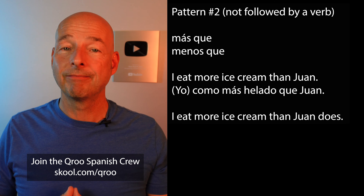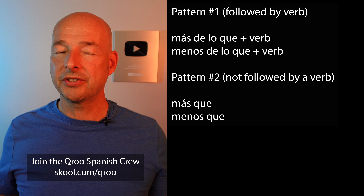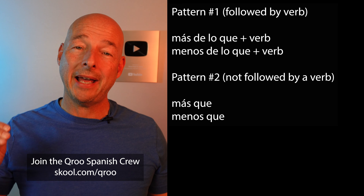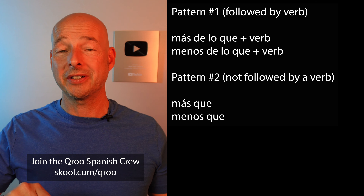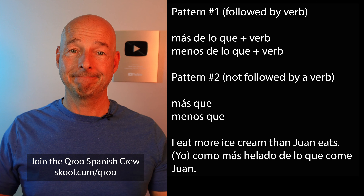Now, I know someone out there is thinking: 'What if I want to say that verb again? What if I want to say I eat more ice cream than Juan eats?' I know somebody's asking that because some folks definitely overthink things — I think I overthink things sometimes too. If you absolutely insist on putting that verb there, and it's not a 'does' or 'did,' which pattern do you think we'd choose? Pattern number one. It's more natural in Spanish to just say como más helado que Juan and leave it, but if you insist — pattern number one: yo como más helado de lo que come Juan.